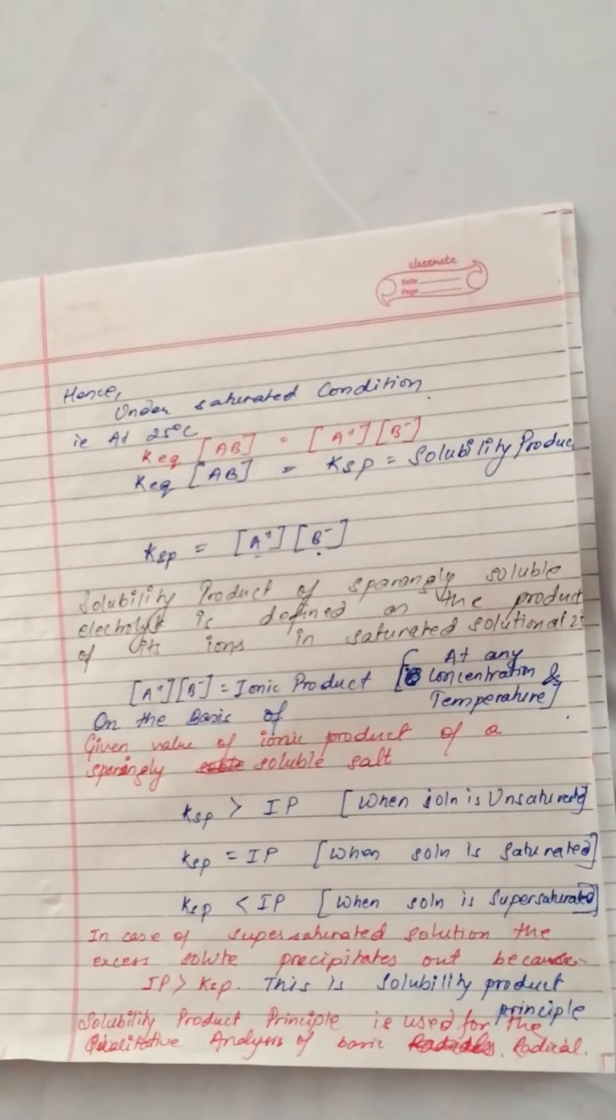A+ times B- is the ionic product. On the basis of the given value of ionic product of a sparingly soluble salt: if KSP is greater than IP, the solution is unsaturated; if KSP equals IP, it is saturated; if KSP is less than IP, it is supersaturated.